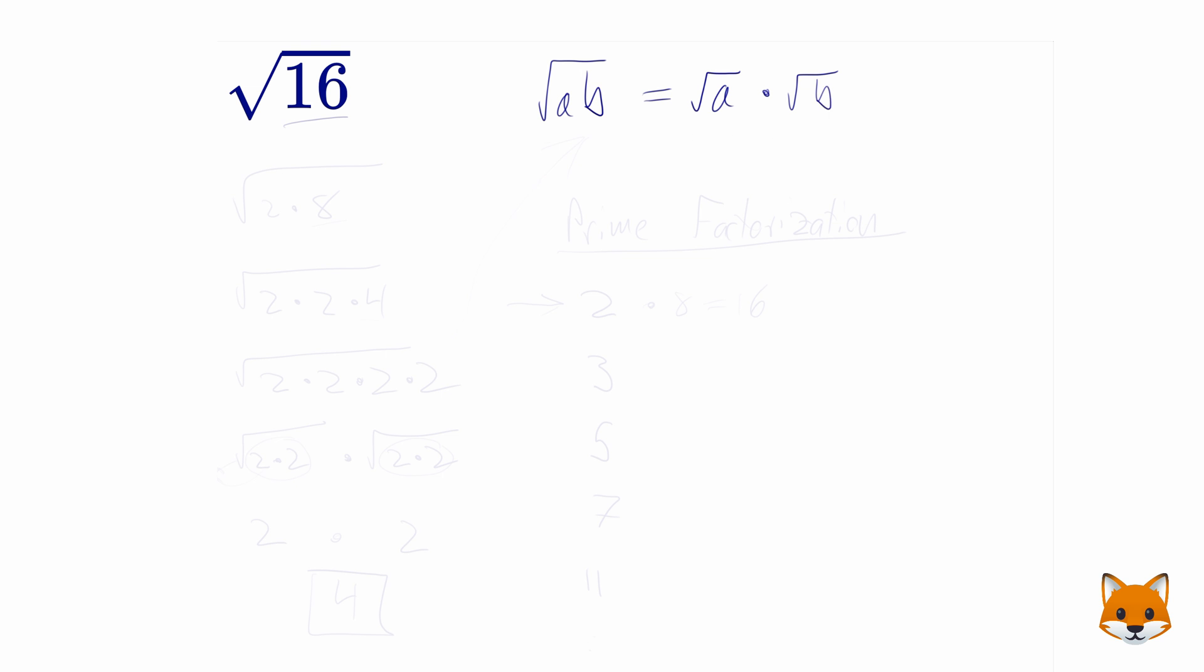And if we know this, then the idea is that if we can rewrite 16 as a series of things being multiplied by each other, so a series of products, then that might help us break this down into simpler form.